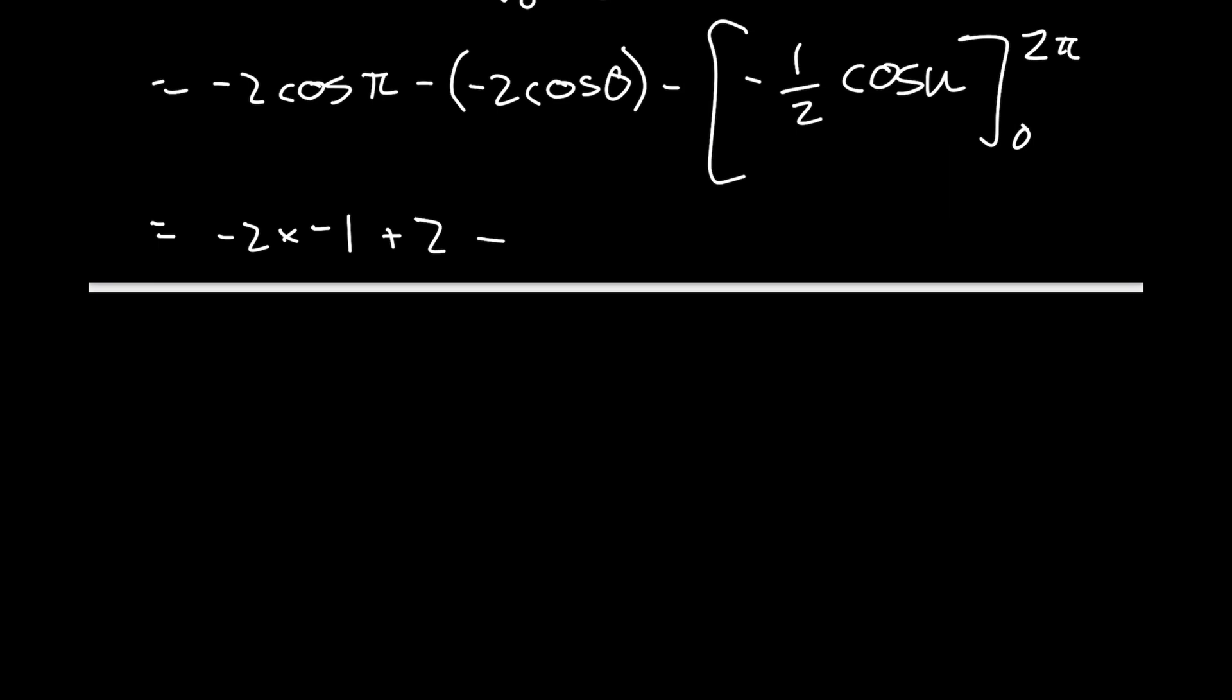Then subtract what we get from this bracket: -1/2 cos(2π) - (-1/2 cos(0)).